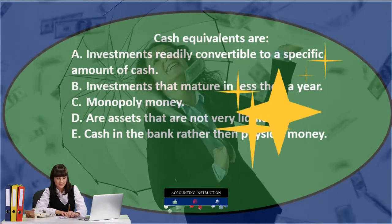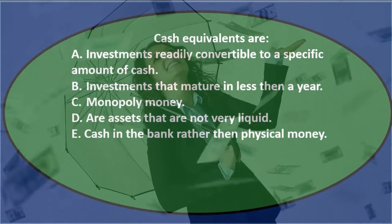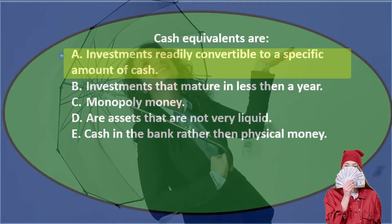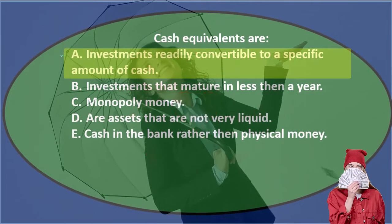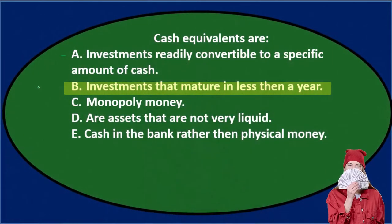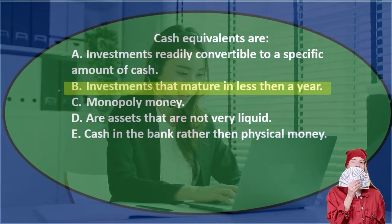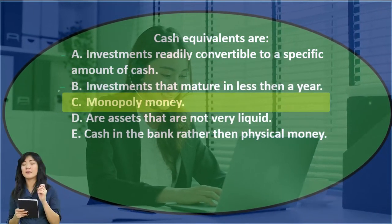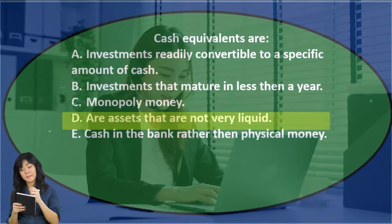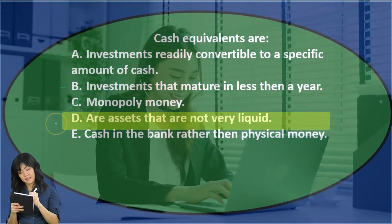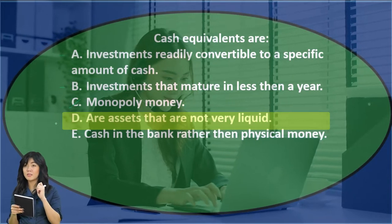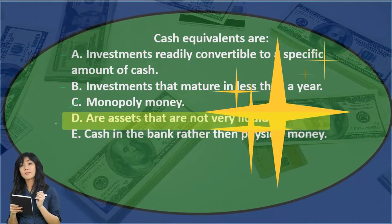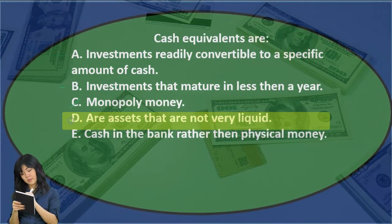So we'll go through this again and see if we can use the process of elimination to narrow this down. Cash equivalents are A. investments readily convertible to a specific amount of cash — that seems fairly reasonable, so I'll keep that. B says investments that mature in less than a year; if it matures in less than a year, that's more liquid, so I'll keep that one for now. C says monopoly money, and that's probably not true since that's like a game. D says are assets that are not very liquid. If we understand liquidity, cash is very liquid, so cash equivalents would also be very liquid — not illiquid. So D would not be correct.